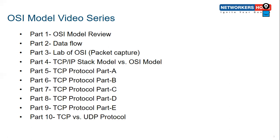Part five covers TCP protocol, and because TCP is a very vast protocol, we've divided it into five sub-parts — A, B, C, D, and E. Parts five through nine in the OSI series will cover TCP protocol, and part ten is about TCP versus UDP protocol.